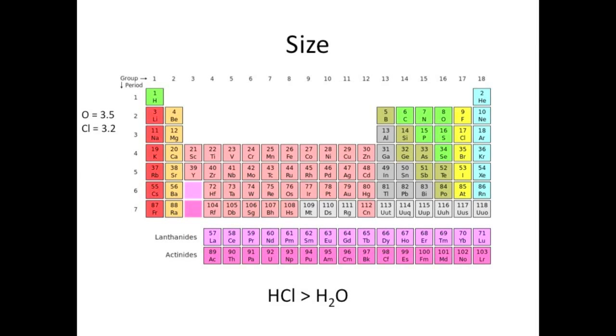Now, which matters more, electronegativity or size? Here's the periodic table again with the electronegativities of oxygen and chlorine. 3.5 and 3.2 are close enough to make a comparison based on size alone. Obviously, HCl is much more acidic than water, and that's because chlorine is much larger than oxygen, and size trumps electronegativity up to a point.